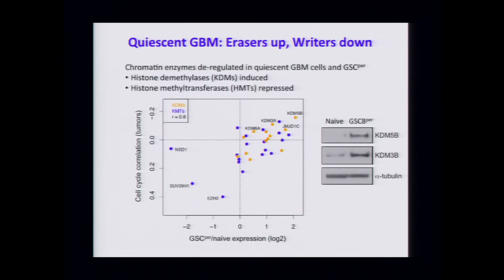On many levels these persister cells look much more like tumor cells — in particular like those tumor cells that are quiescent and non-cycling. Comparing the primary tumors with gene expression, genes associated with quiescent tumors are anti-correlated with cell cycle. Comparing naive GSCs to dormant GSCs, genes that are high in the quiescent drug-tolerant ones we selected are also high in the dormant non-cycling tumor cells.